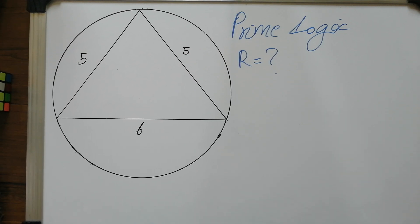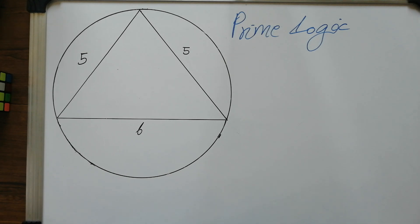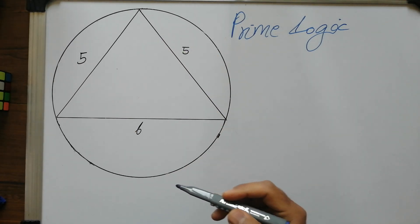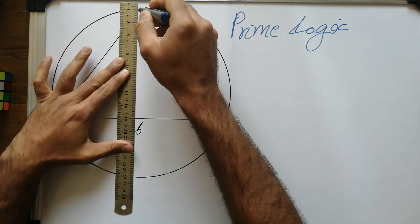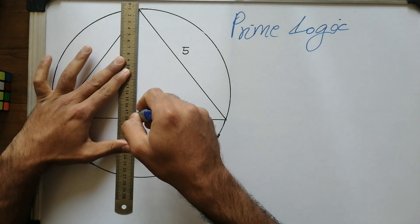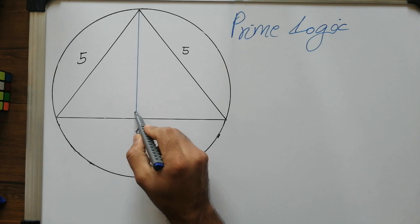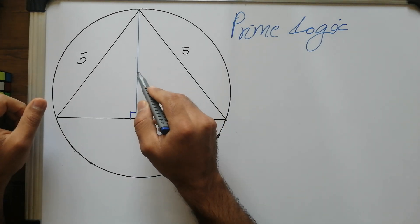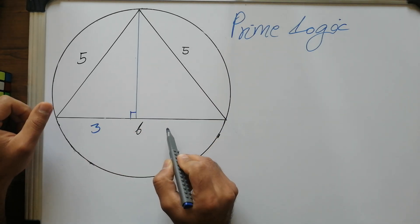I'm going to solve it using two or three different methods. I'll start with a more gradual step-by-step approach and then move to formula-based methods. This is an isosceles triangle with sides 5, 5, and 6. The height of an isosceles triangle bisects the base, so we can calculate the height using the Pythagorean theorem.